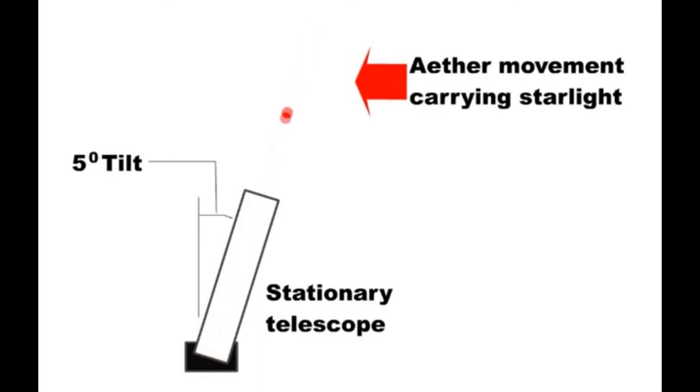So tipping the telescope does not tell us whether it is the starlight moving or the telescope moving.